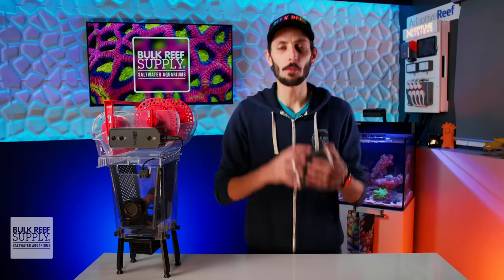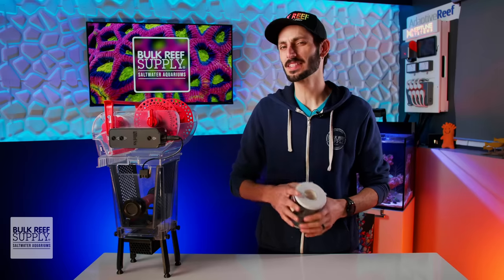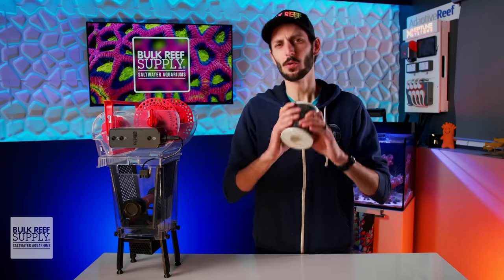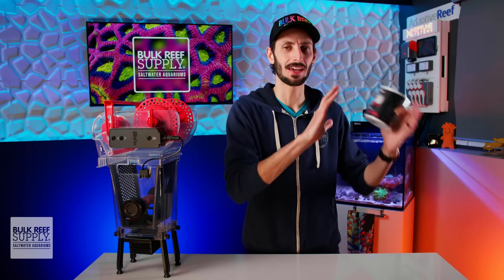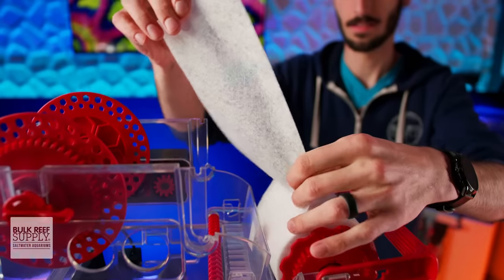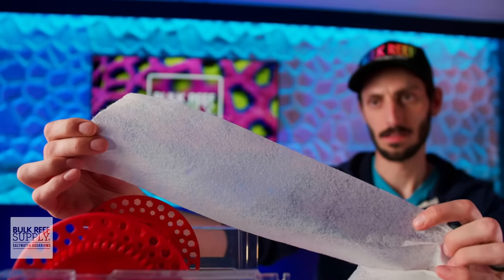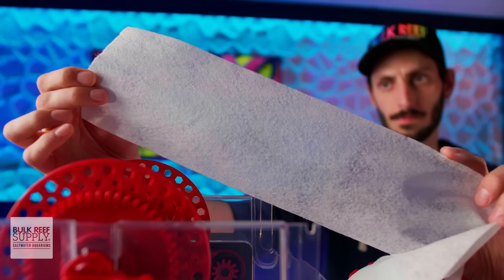Before I dive into the app, I want to talk about the fleece that Red Sea selected for the Reef Mat because they were quite purposeful in their selection of using a 200 micron fleece, which is less dense or has larger pores than a lot of the fleece mesh that other filter rollers use. Using a 200 micron fleece means you'll still pull out all of the important solid waste like uneaten food, fish poop, bits of algae, and dusty particles from the water.